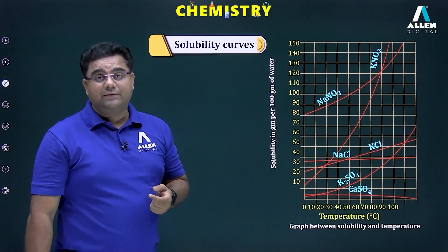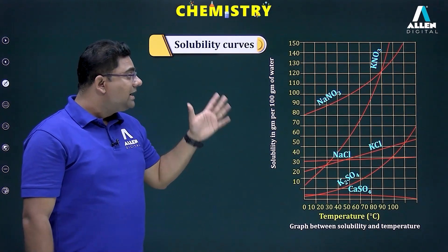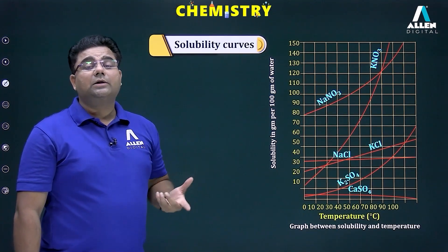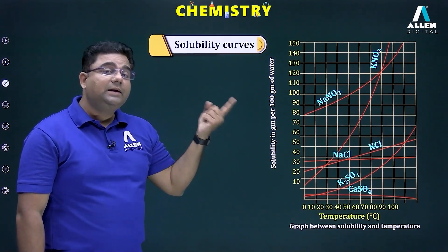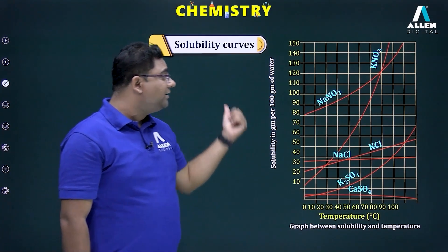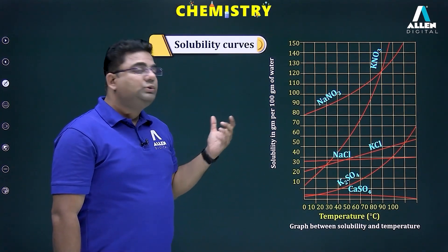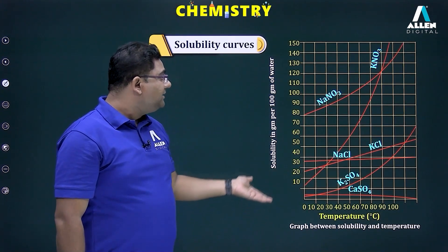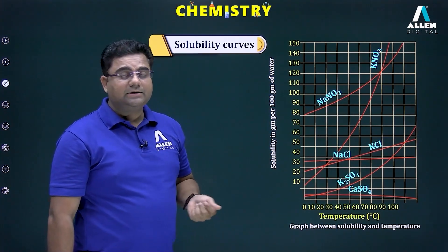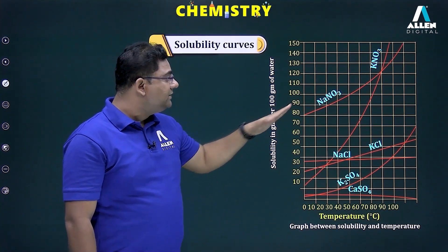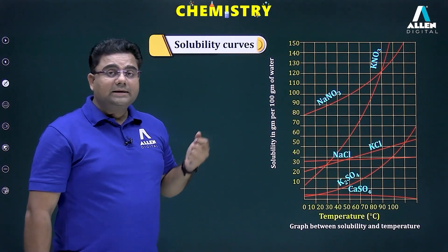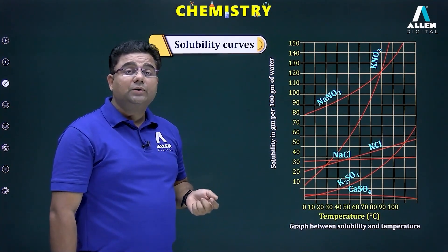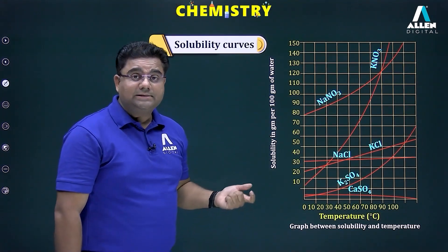Next, we move on to the solubility curve. With the help of this curve, we can observe the solubility of a solute in a solvent by increasing the temperature. The curve has two variables: increase in temperature on one axis and increase in solubility on the other. As we increase the temperature, the solubility of different solutes also increases.